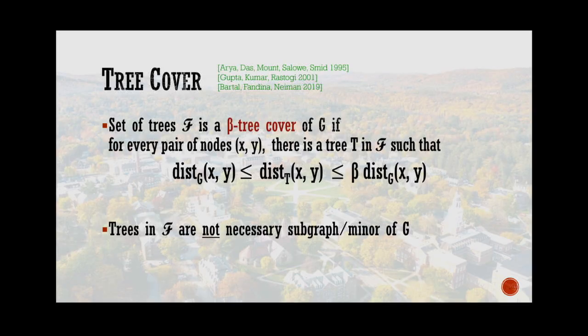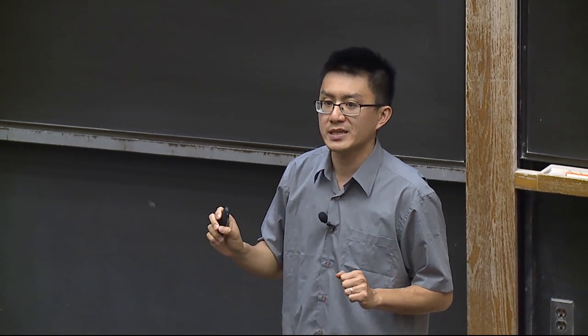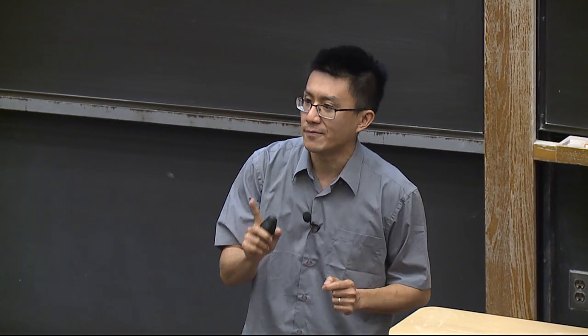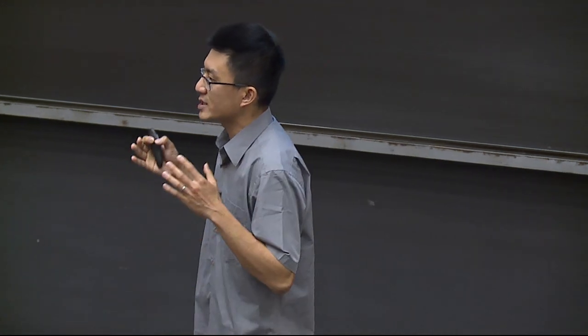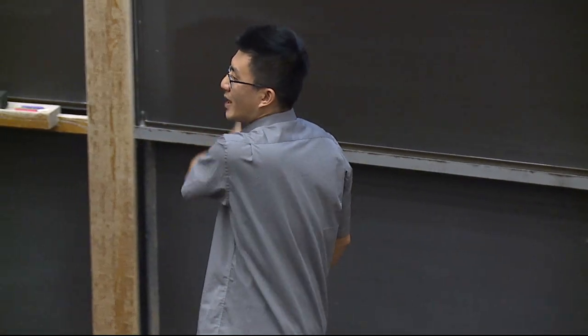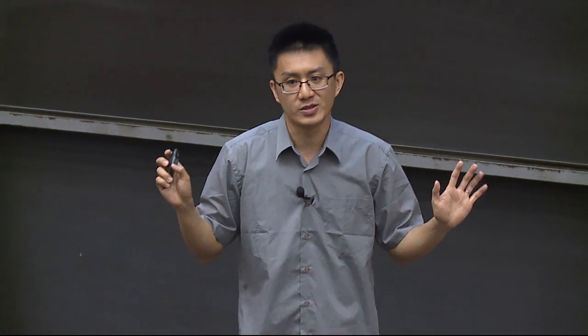Instead of embedding, we can consider a tree cover: a collection of trees such that for every pair of nodes in the original graph, you can find one tree in the collection that preserves the distance with distortion beta. The difference from tree embeddings is that in a tree embedding you want the expected distortion to be small — a constant fraction of trees preserve distance up to beta — whereas here we only need one tree. In many algorithmic applications, one tree is good enough: you query each tree and take the best answer.